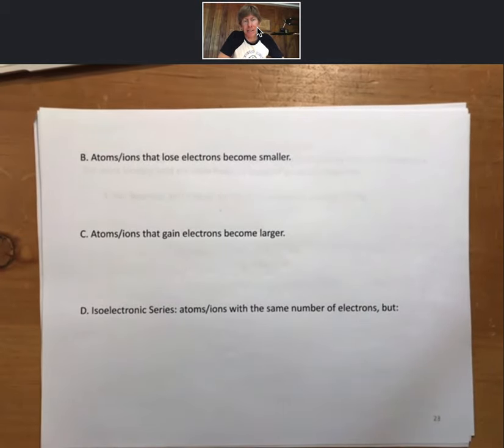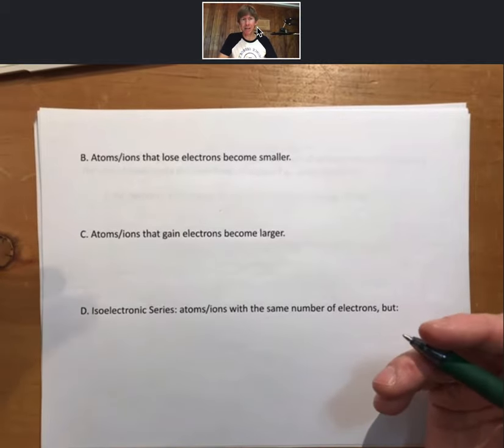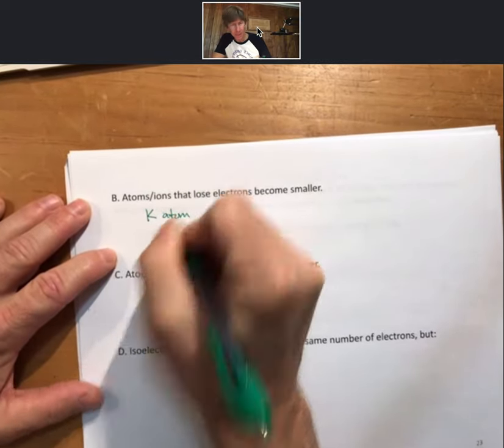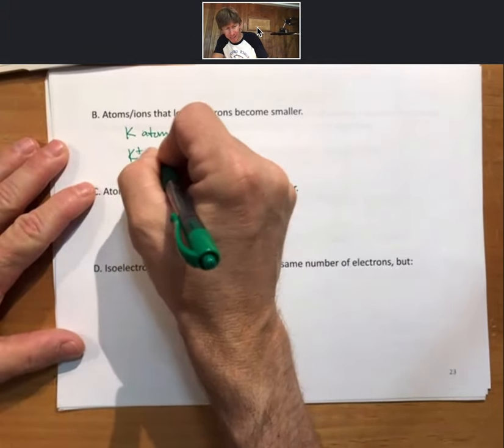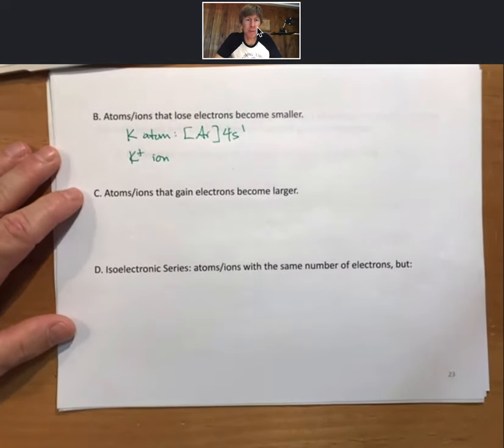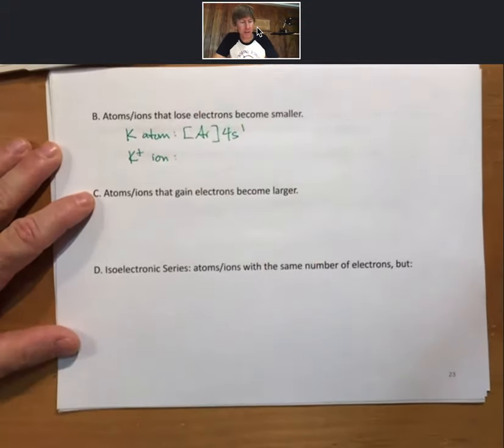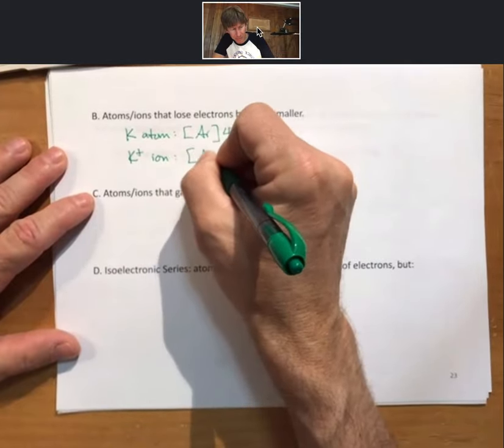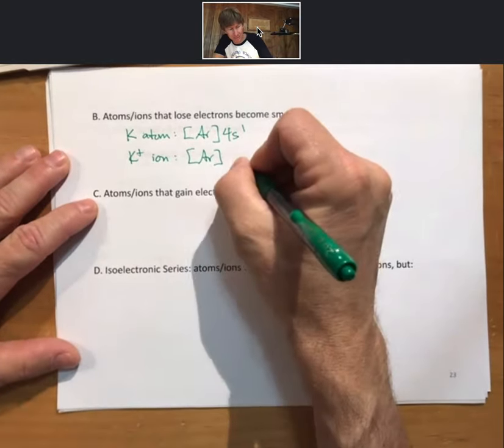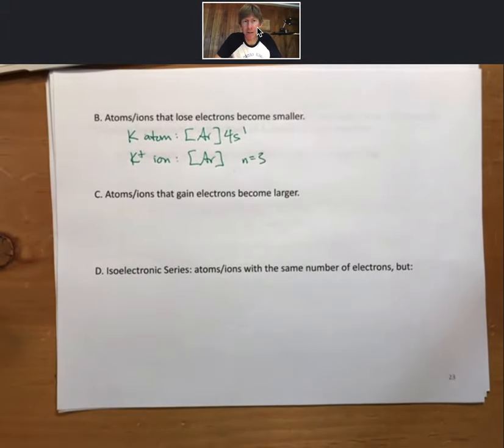Now, atoms or ions that lose electrons become smaller. I think that is generally true. That is true more than generally. However, here's an easy example. If we look at a potassium atom versus a potassium ion, we have argon 4s1, one electron in the n equals 4 level. As we go to K plus, we lose that 4s1 electron, and the highest value of n is now n equals 3. So we lost a whole energy level. We know that n equals 4 is a lot larger than n equals 3, n equals 2, n equals 1. So, of course, it becomes smaller.